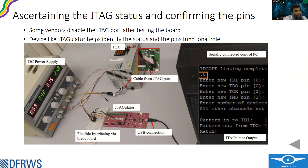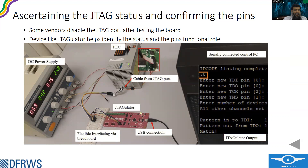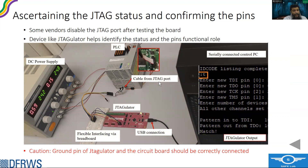Vendors sometimes disable JTAG after testing, so we need to ascertain JTAG status. For that, we use a small device called JTAGulator. We connect the contact pad on the circuit board to the JTAGulator connector, and it tries all combinations and permutations to find the exact JTAG pins. If it successfully finds them, it also confirms the JTAG is still functional in the IC. One caution: the ground must be manually matched before starting the JTAGulation.